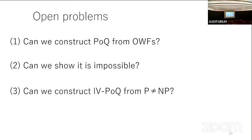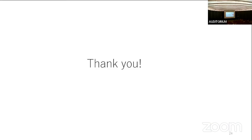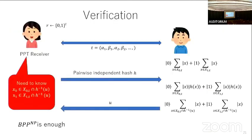Question: How does IVPoQ relate to sampling-based proofs of quantumness — does one imply the other? Answer: Great question — this touches on some unpublished work. Intuitively, sampling advantage is equivalent to search advantage: SampBQP ≠ SampBPP is equivalent to FBQP ≠ FBPP. If you have sampling advantage you also have search advantage. And search advantage is just a non-interactive IVPoQ.